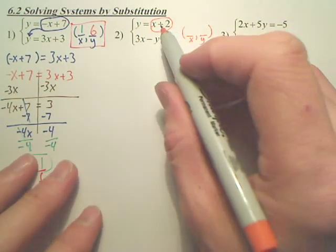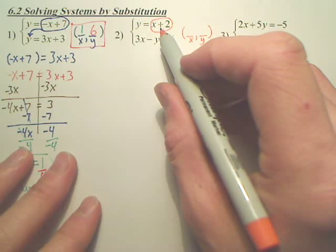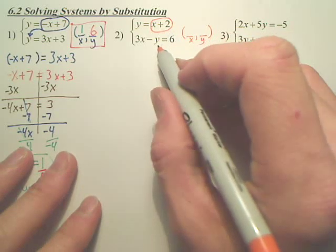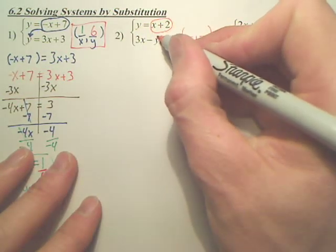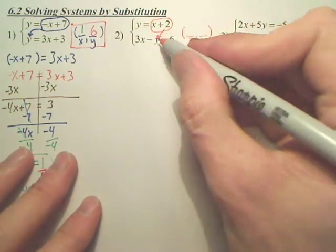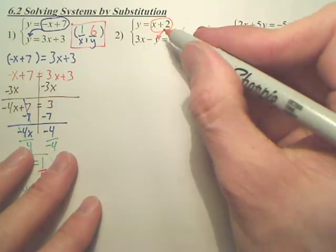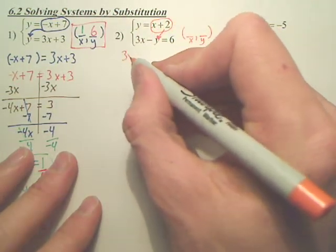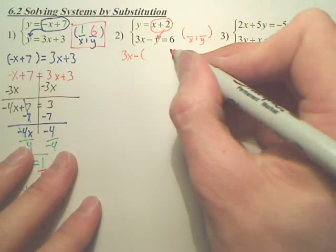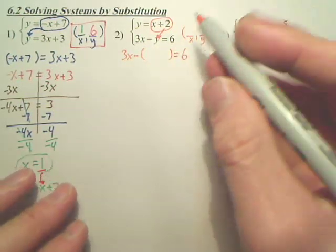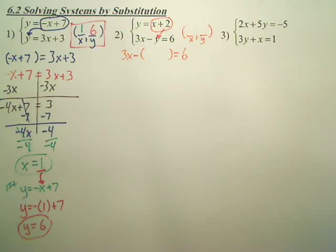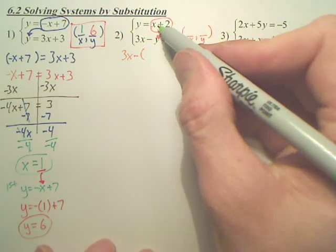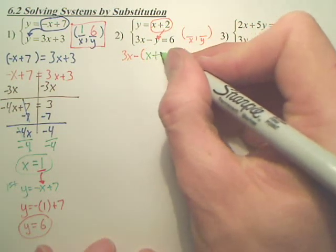Where am I going to plug this? This equals y. So I'm going to take this and plug it right there for y. x plus 2 is y. So I'm going to take 3x minus y equals 6. And I'm going to replace the y with this x plus 2.